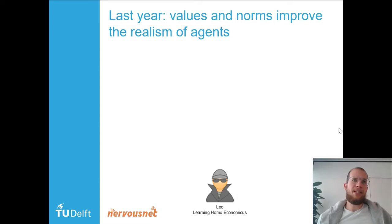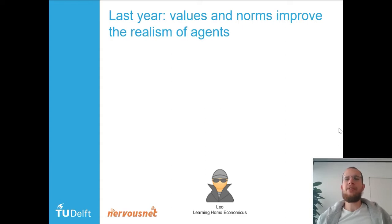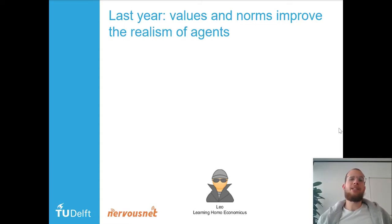So what did we do? Last year we showed that values and norms improve the realism of agents. We first tested Leo — he was a bit of a gangster. He is a Learning Homo Economicus agent, meaning a classical economical agent that only cares about his own welfare. Leo is a bit more complex — it also tries to learn.